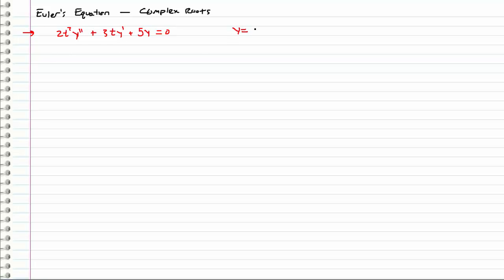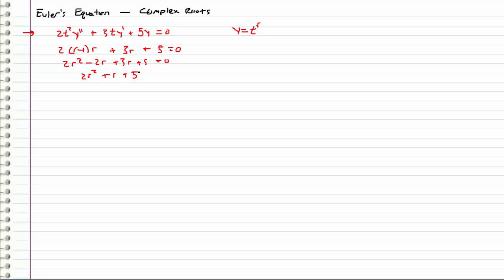What we do is assume y is of the form t to the r, where r is the roots that we are looking for. If you watched the previous video, we can go straight into the characteristic equation that we derived. We take this coefficient, multiply it by r minus 1 times r, then this coefficient in front of the t and multiply it by r, and then plus 5 equals 0. So we get 2r squared plus r plus 5 is equal to 0.